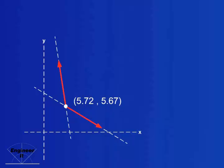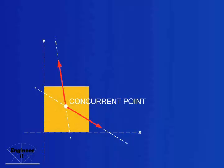We now know where in our coordinate system the resultant of the two vectors must be acting.